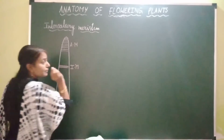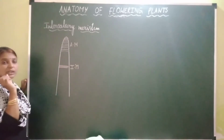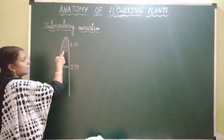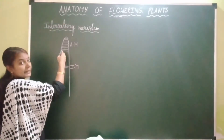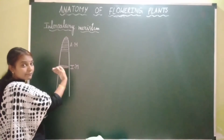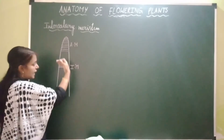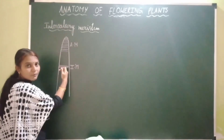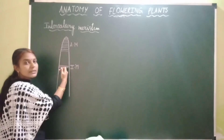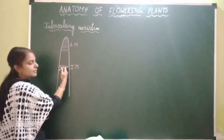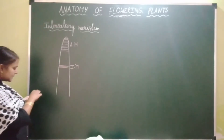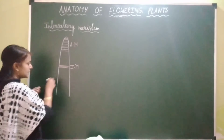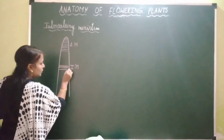Some of the meristematic cells present in the apical meristem get separated from it and acquire a lower position, resulting in the formation of intercalary meristem. This intercalary meristem can be present above the node.